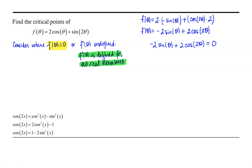Solving this equation can be somewhat challenging because we have a sine function and a cosine function involved, making it difficult to solve directly. So what we want to do is rewrite this equation either in terms of sines or cosines. If we have an equation involving a single trigonometric function, we can then strategize about how to solve it. So we're going to use a trigonometric identity.